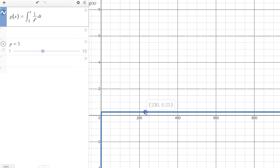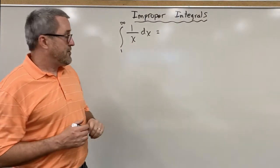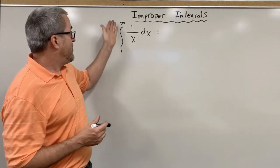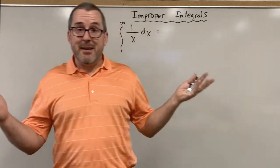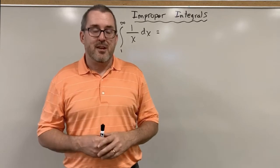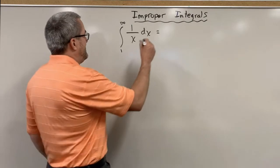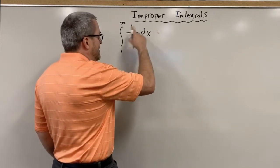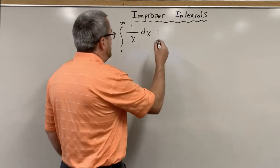Let's go back to the whiteboard and see if we can make sense of what we're seeing in Desmos. We've seen that the integral of 1 over x dx, as x varies from 1 to infinity — thus making this integral improper — seemed like the accumulated area underneath this curve just kept getting larger and larger. Let's confirm that with paper and pencil work. Here's how it would look. Notationally, we'd like to communicate what we're doing very clearly.